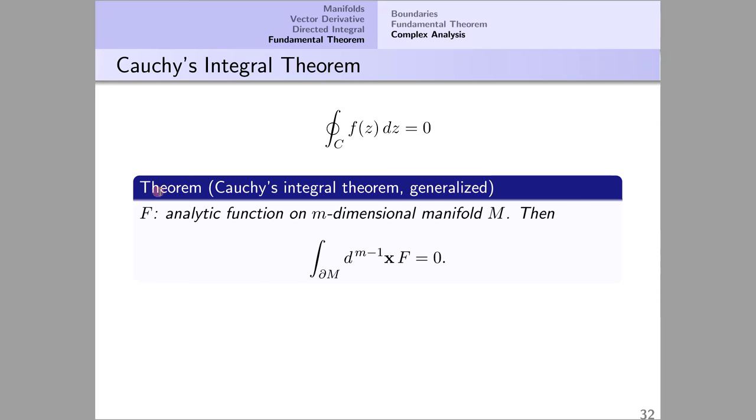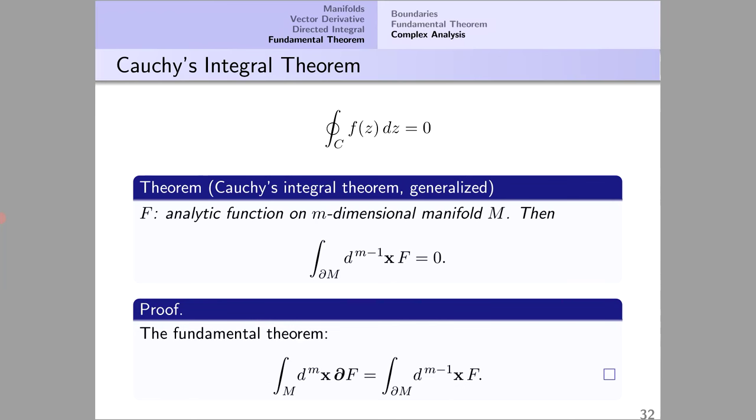Here is its generalization to manifolds. If f is an analytic function on an m dimensional manifold m then the integral of f around the boundary, the directed integral of f around the boundary is zero. And for the proof we need only write the fundamental theorem. If f is analytic then this is zero, the left side is zero and so too is the right.